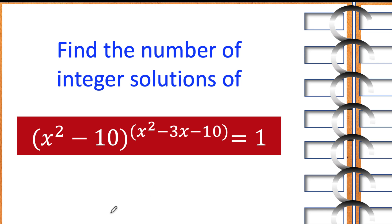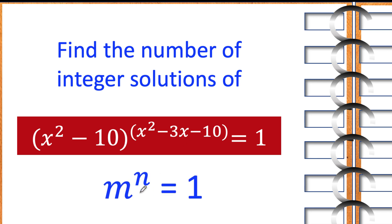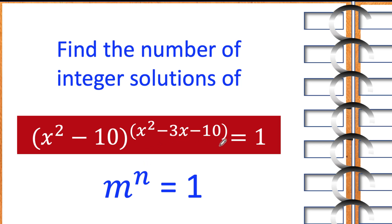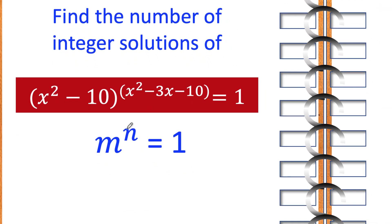Notice that in this equation, the quantity x squared minus 10 is the base and x squared minus 3x minus 10 is the exponent. So the form of this equation is in the form m raised to n equals 1, where m is the base x squared minus 10, and n is the exponent x squared minus 3x minus 10.